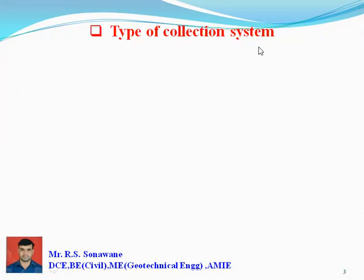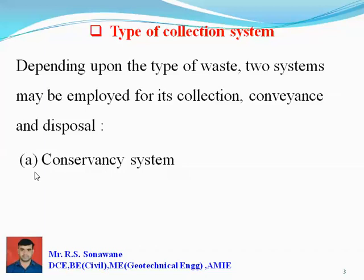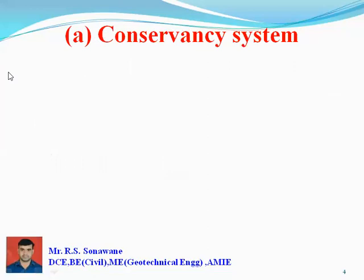Depending upon the type of waste, there are two systems that may be employed for its collection, conveyance, and disposal. There are two main systems: the first system is the conservancy system, and the second one is the water carriage system. So first, the conservancy system.